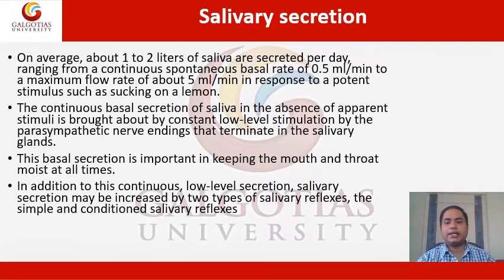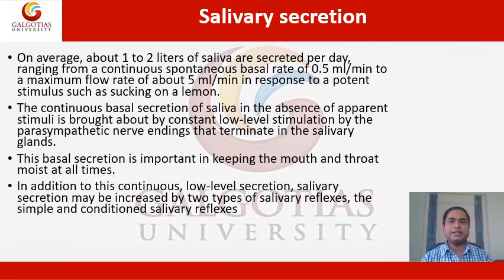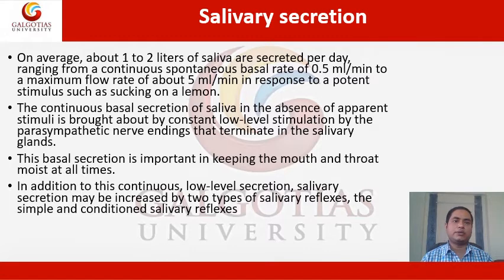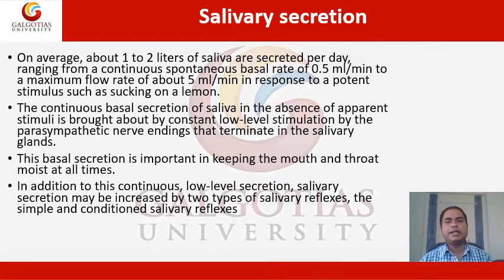On average, about 1 to 2 liters of saliva are secreted per day, ranging from a continuous spontaneous basal rate of 0.5 ml per minute to a maximum flow rate of about 5 ml per minute in response to a potent stimulus such as sucking on a lemon. The continuous basal secretion of saliva is brought about by constant low-level stimulation by parasympathetic nerve endings that terminate in the salivary glands. This basal secretion is important in keeping the mouth and throat moist at all times. Salivary secretion may also be increased by two types of salivary reflex: the simple and conditioned salivary reflexes.